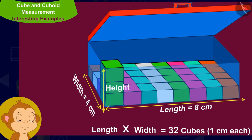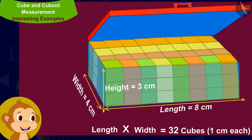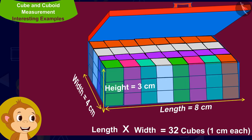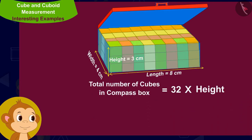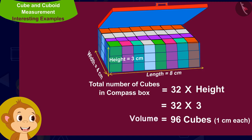Now, the height of the compass box is 3 centimeters. This means there are 3 such layers of cubes of dimension 1 centimeter each. That means each box would have a total of 32 times 3 — that is 96 cubes of dimension 1 centimeter each. In other words, the volume of a compass box is equal to 96 centimeter cubes.